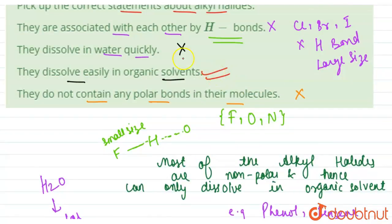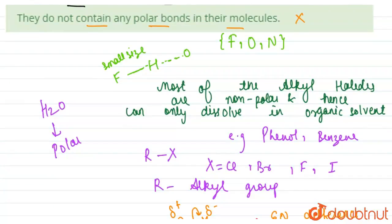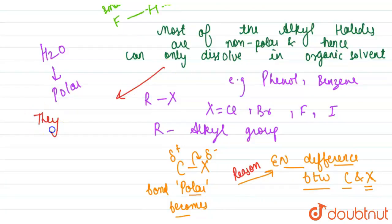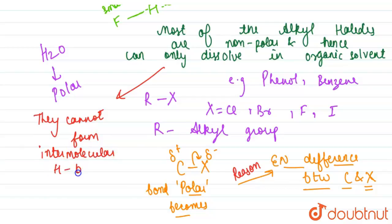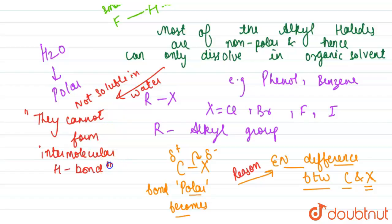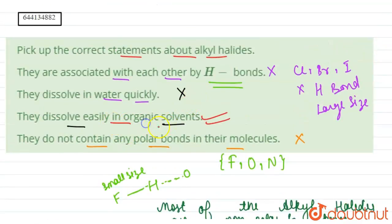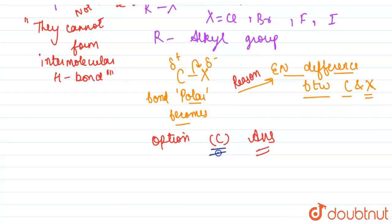So the only correct option is that they dissolve in organic solvents and do not dissolve in water. The first reason is that most alkyl halides are non-polar. Another reason is that they cannot form intermolecular hydrogen bonds, which also contributes to their insolubility in water. Therefore, the correct statement is they dissolve easily in organic solvents like benzene — option C.